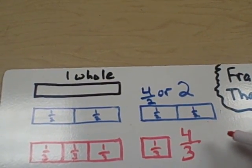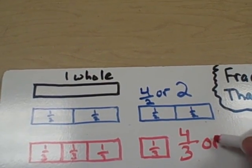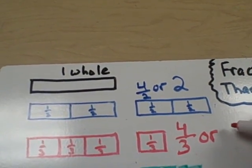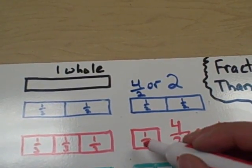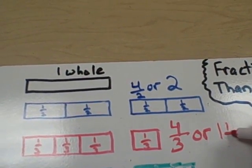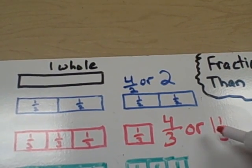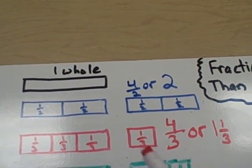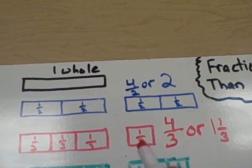And if I were to write it as a mixed number, I know three thirds makes one whole, and there's an extra third right here. So the other way I could write it would be one and one third. Four thirds, or one and one third.